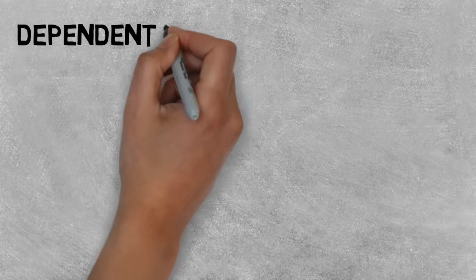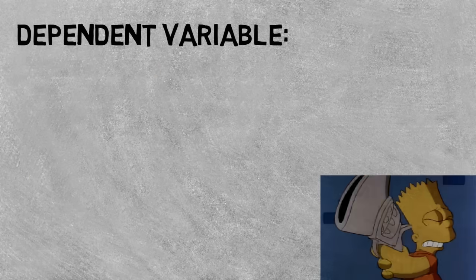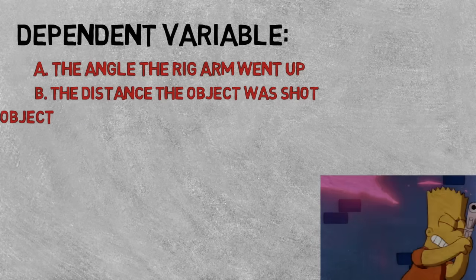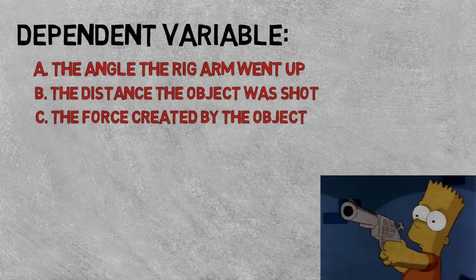Now try the dependent variable. Is it the angle the rig arm went up, the distance the object was shot, or the force created by the object?